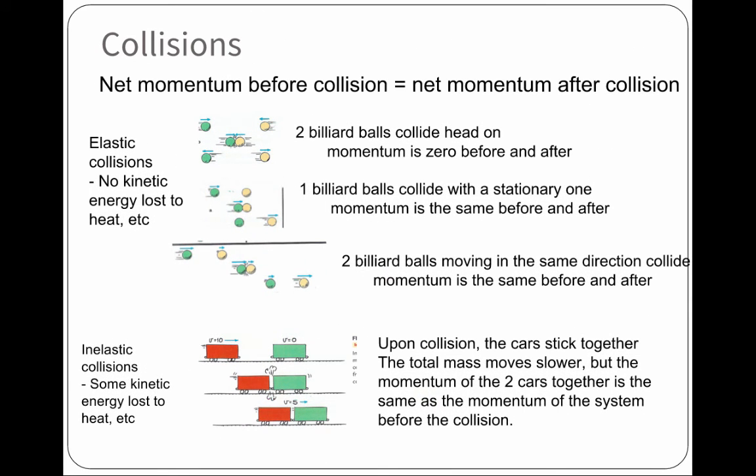So let's look at collisions in general. Net momentum before a collision is equal to the net momentum after the collision. Elastic collisions, there's no energy that's lost, no heat, no friction, no anything. And it is a two to two relationship. In inelastic collisions, you'll have some loss due to friction, but the two cars will stick together. Inelastic is sticking together.